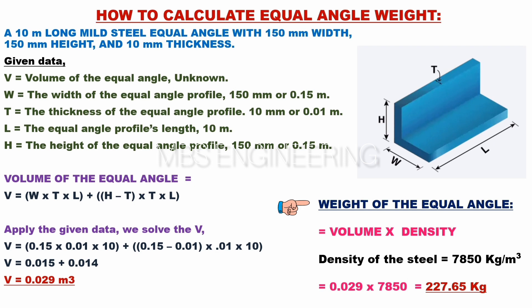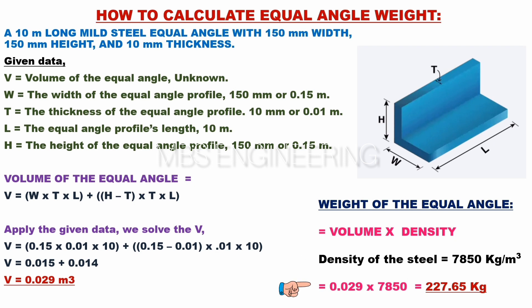Next, we learn about how to calculate the weight of mild steel equal angle materials. Weight of the material equals volume multiplied by density. The density of mild steel is 7,850 kilograms per cubic meter. So: 0.029 multiplied by 7,850 equals 227.65 kilograms. The weight of the mild steel equal angle is 227.65 kilograms.